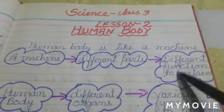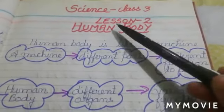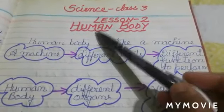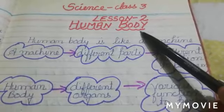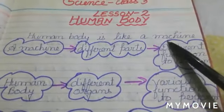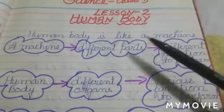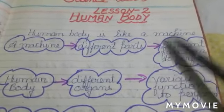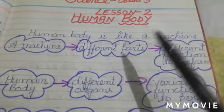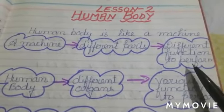Hello my dear children, welcome to your science class. Today we will start our next chapter, chapter 2, and the name is human body. We all know that human body is like a machine. Our body actually acts like a machine — as a machine has different parts and all the parts have different functions to perform.